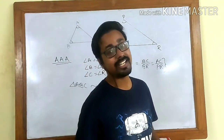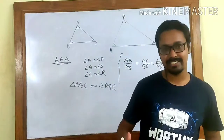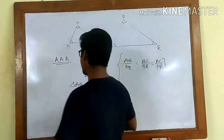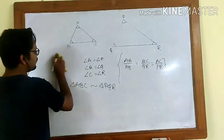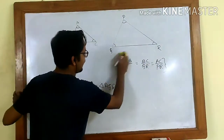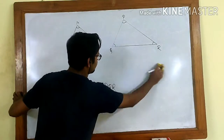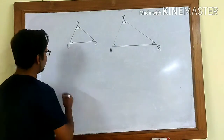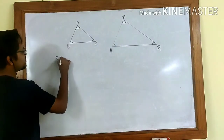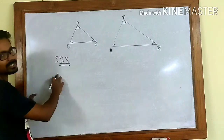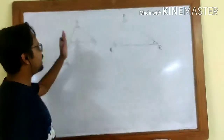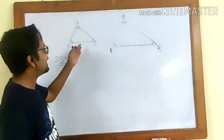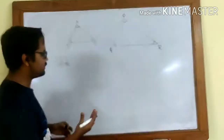The second criteria is Side-Side-Side, and it is just the reverse of AAA. In this criteria we are only bothered about the sides and not the angles.